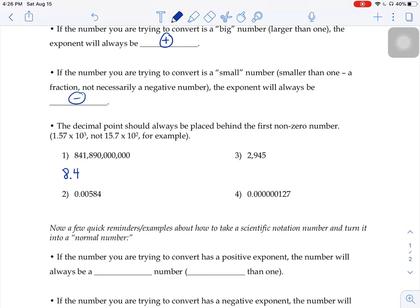So if I take that decimal and put it behind the first number that's not a zero, it would go between the 8 and the 4. I would include any other non-zero numbers, 8.4189.